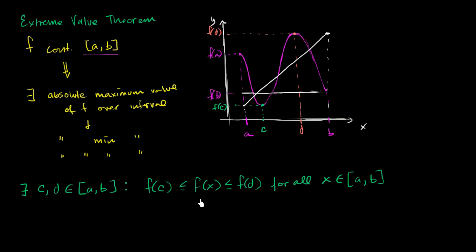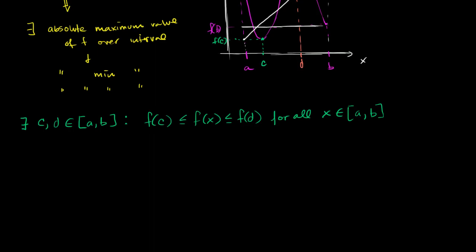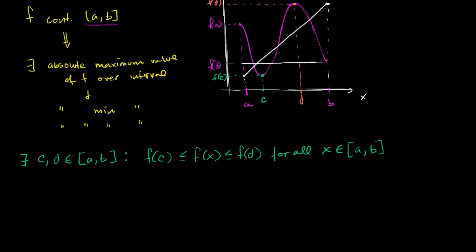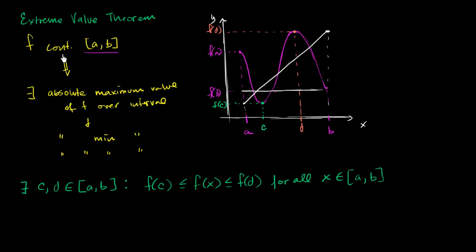First, let's think about why f needs to be continuous. I could easily construct a function that is not continuous over a closed interval, where it is hard to articulate a minimum or a maximum point. I encourage you to pause this video and try to construct that function on your own — try to construct a non-continuous function over a closed interval where you can't really pick out an absolute minimum or an absolute maximum value.